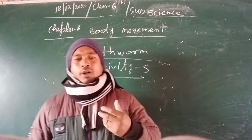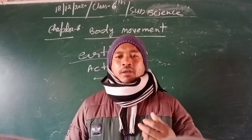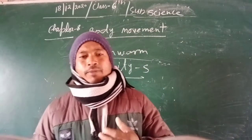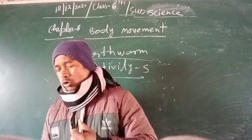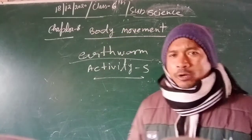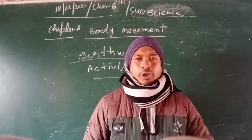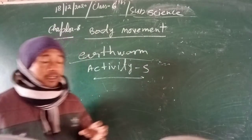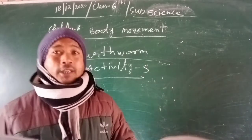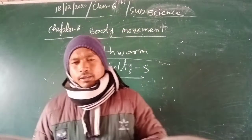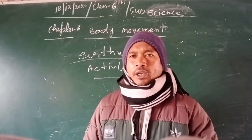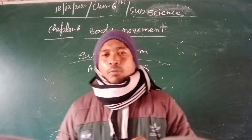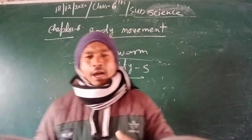The earthworm has muscles which help to extend and shorten the body. Kechua has muscles in the body, and there are no bones — it does not have any bones.